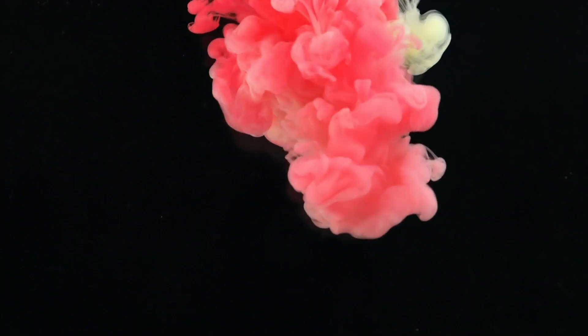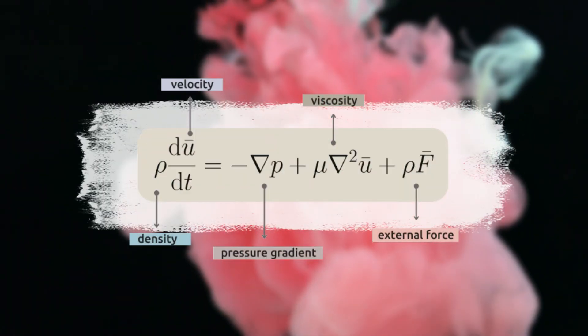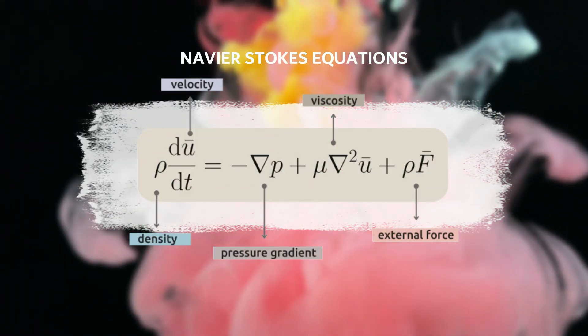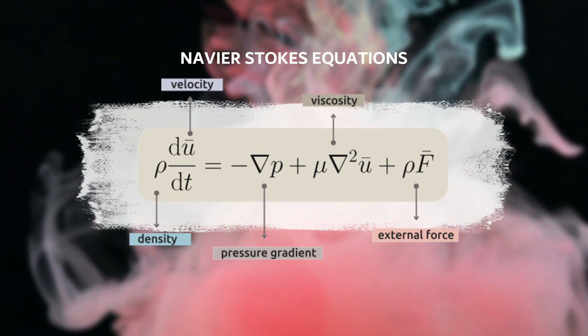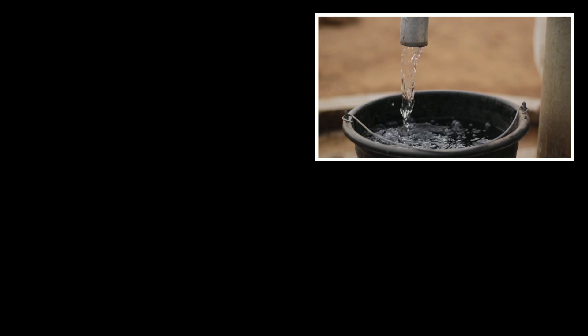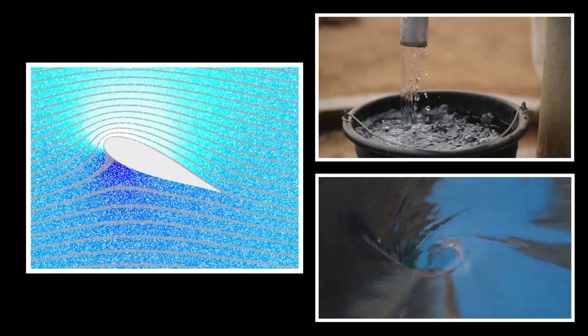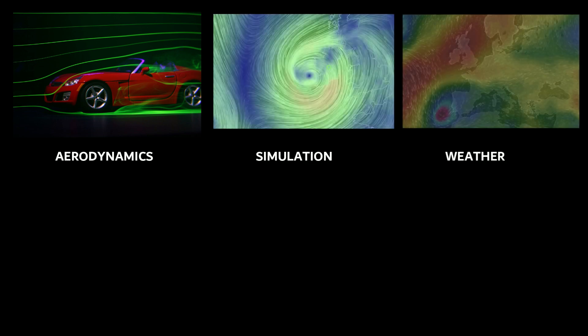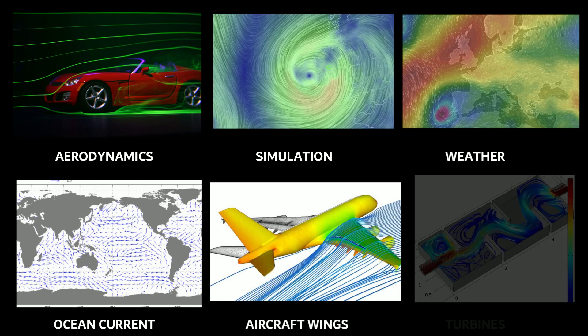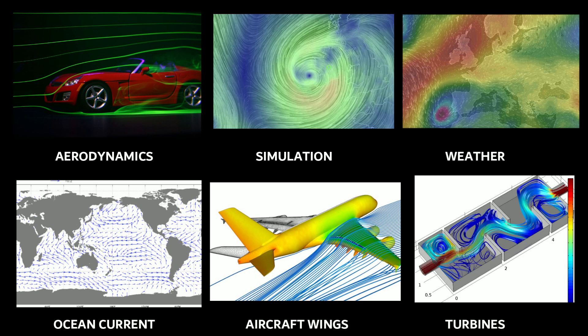The seventh most important equations in physics are the Navier-Stokes Equations — partial differential equations that help us understand fluid dynamics. Whether it is water flowing through a tap, air flowing under the wings of an aeroplane, or a vortex created in your basin, all are connected by these equations. They build our understanding of aerodynamics, creation of vortices, weather predictions, ocean currents, and technological applications in aircraft wings and turbines.